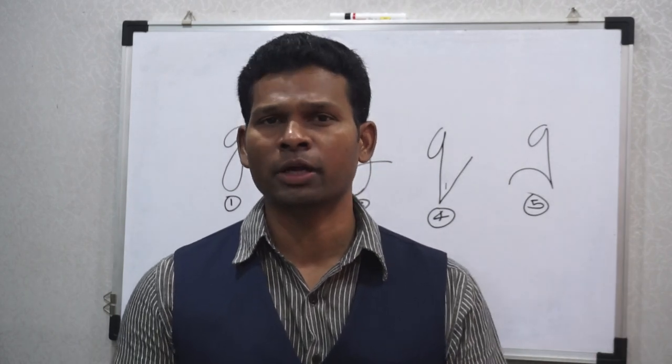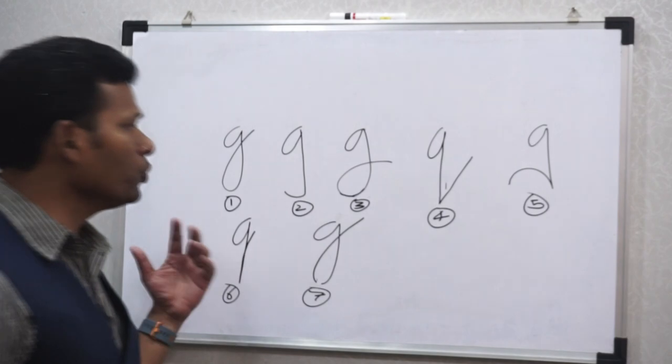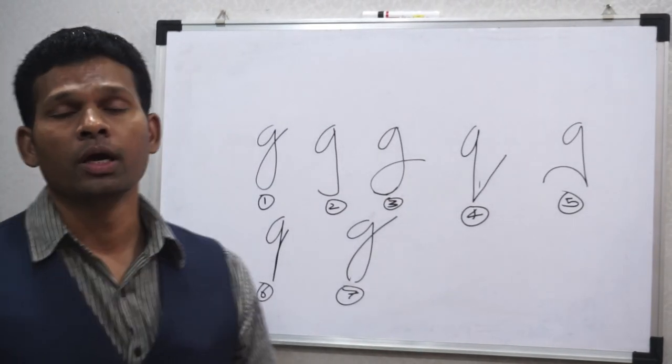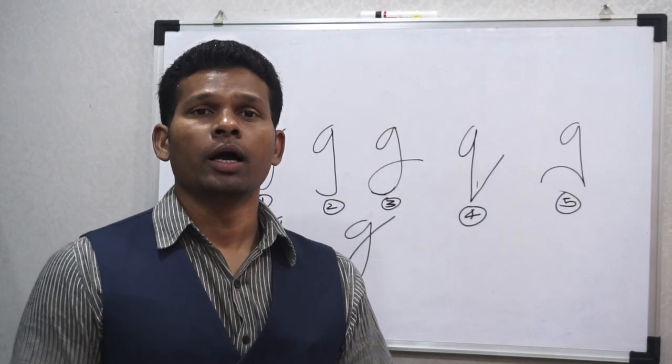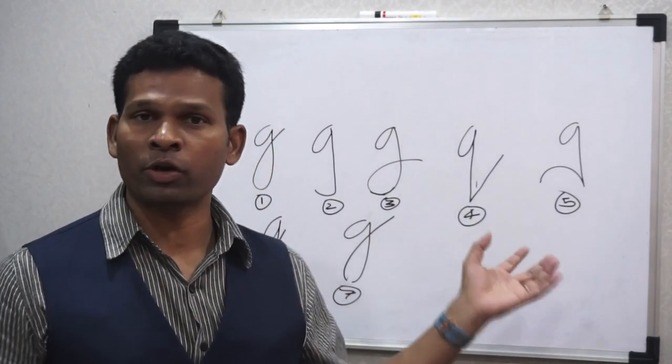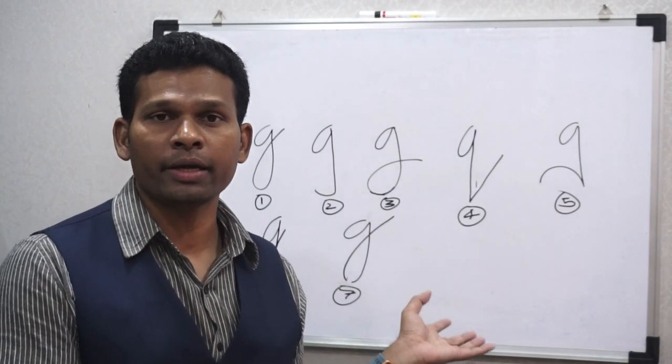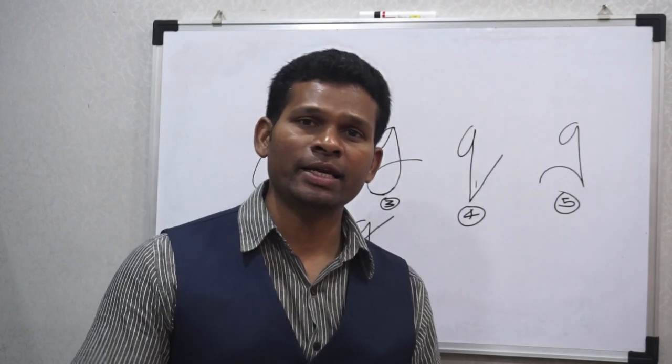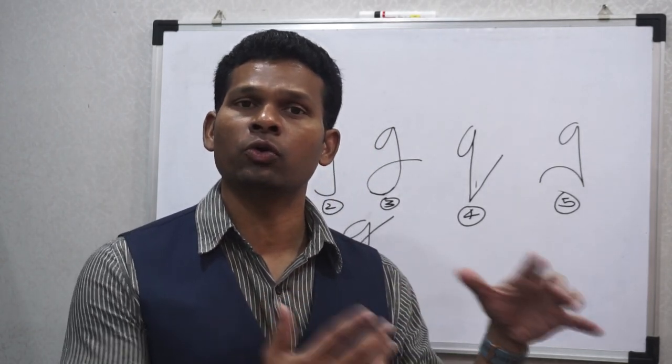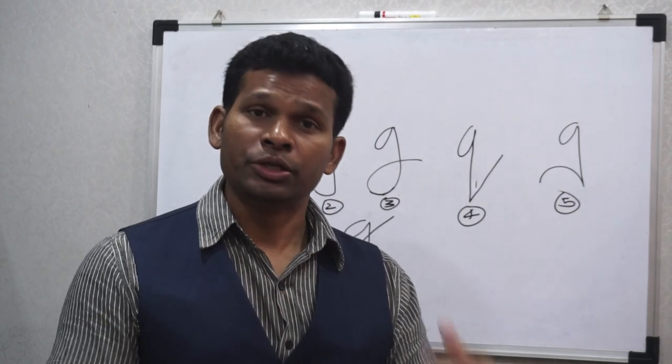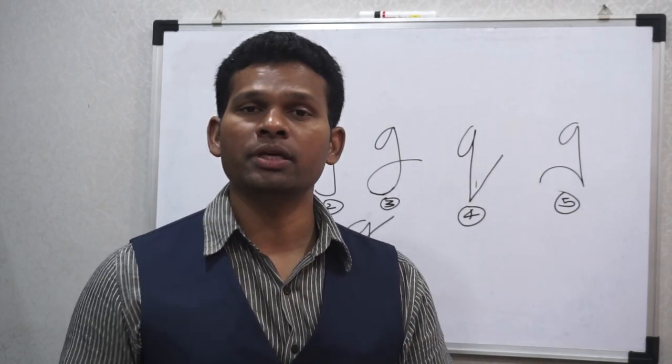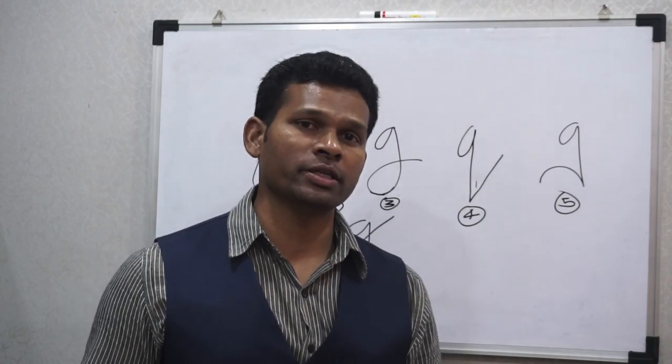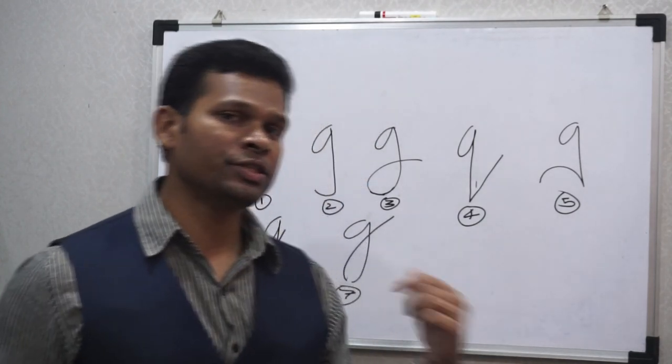So there are a few kinds of G written over here on the board, and you might have different kinds of G than what we have written. But here are a few things which we are going to discuss. For your information, there are three letters which indicate the lower zone: the letters are G, J, and Y. These three letters are predominantly indicating the lower zone all the time. So we are considering here one letter as G.